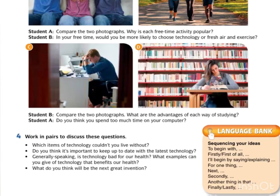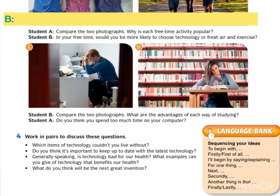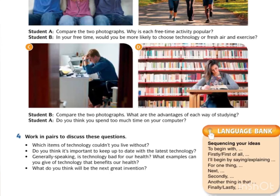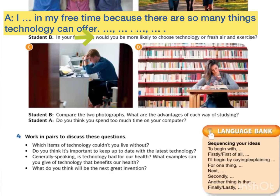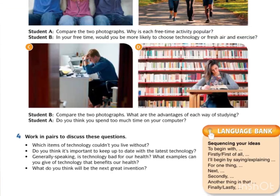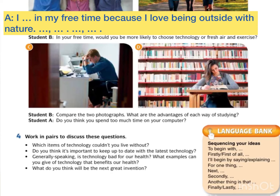Now B tanya pula soalan pada A: 'In your free time, would you be more likely to choose technology or fresh air and exercise?' A bagi jawapan dengan sekurang-kurangnya 3 sebab. Kalau kamu pilih teknologi: 'I would be more likely to choose technology in my free time because there are so many things technology can offer. For one thing,' idea kedua. 'Finally,' bagi idea ketiga. Kalau kamu pilih fresh air: 'I would be more likely to choose fresh air and exercise in my free time because I love being outside with nature. Next,' idea kedua. 'Lastly,' idea ketiga.